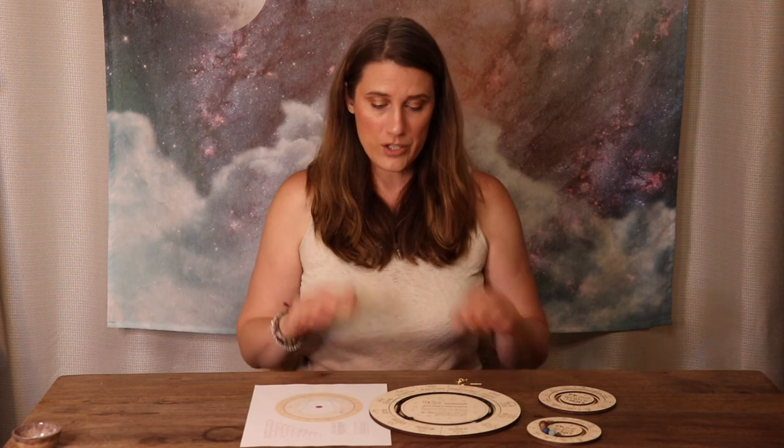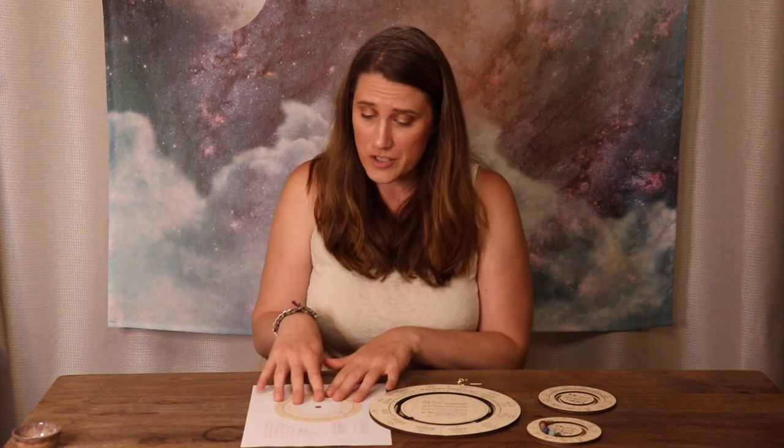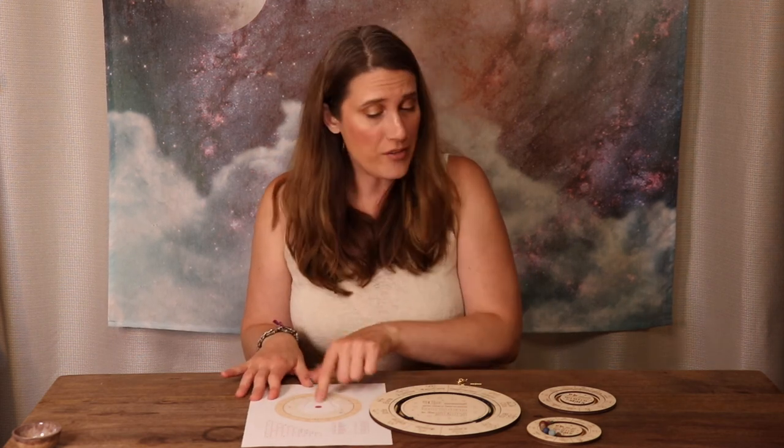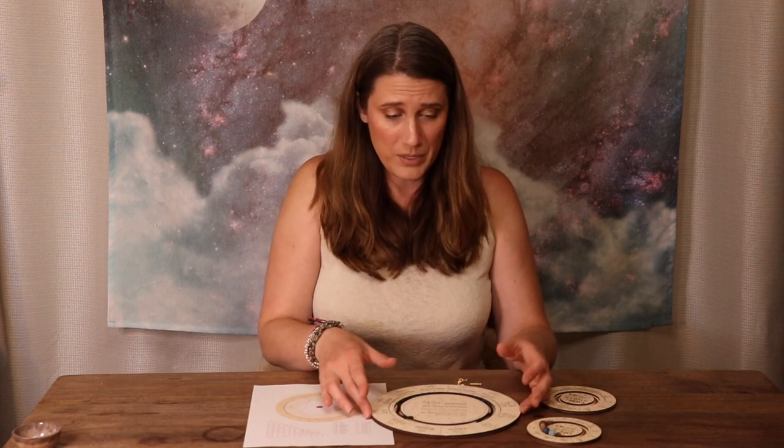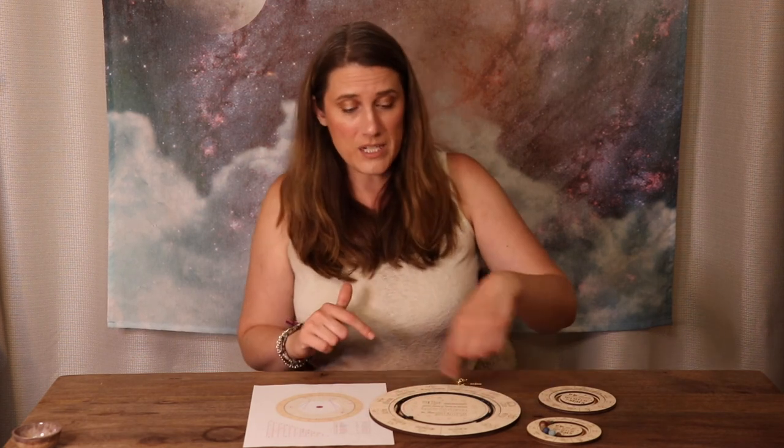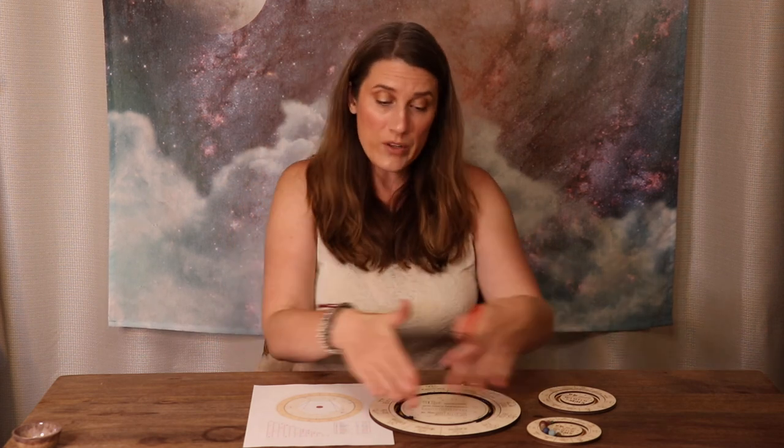So, we're going to basically, all we do is match the locations of the planets on the chart and put the beads in the location here. This helps to keep your beads in place while you're arranging. And then once they're all in order, then you can start stringing.